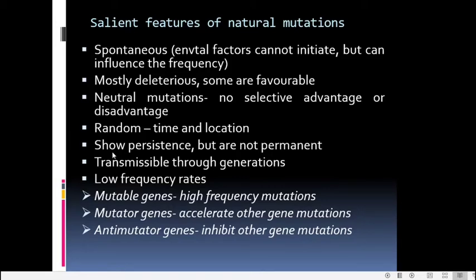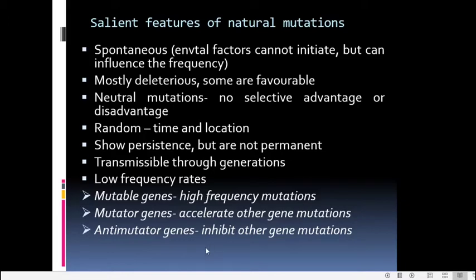Mutations show persistence — once a mutation appears in a population it will be inherited by successive generations without considerable changes, though they cannot be considered permanent. They are transmissible to generations and have low frequency rates. Genes can be classified into three types based on mutability: mutable genes show high frequency mutations; mutator genes can accelerate mutations in other genes; and anti-mutator genes can inhibit mutations in other genes.